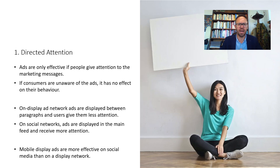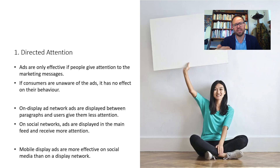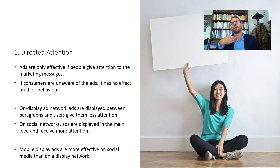On the display ad network, ads are displayed between paragraphs and users give them less attention — when scrolling, people tend to flick past display ads. On social networks, ads appear in the main feed and receive more attention. So if you're doing mobile display ads, try to align the device type with the right medium, favoring social networks like Snapchat, Facebook, and Instagram where ads pop up prominently.